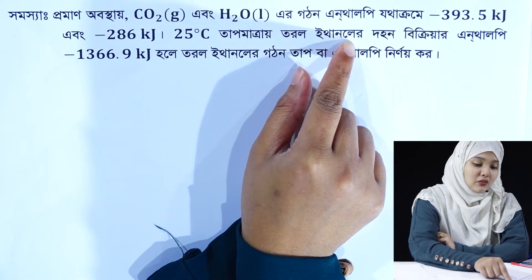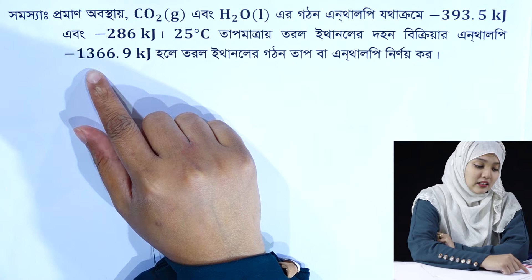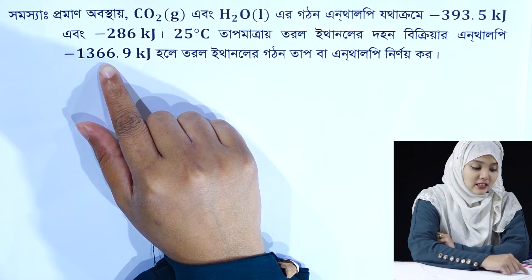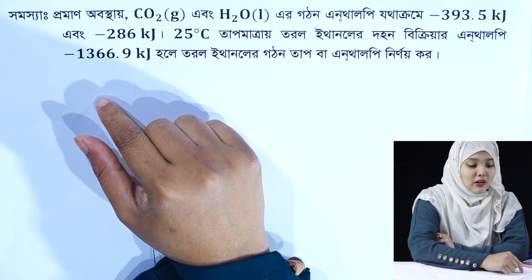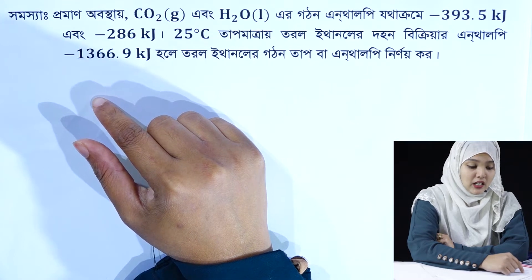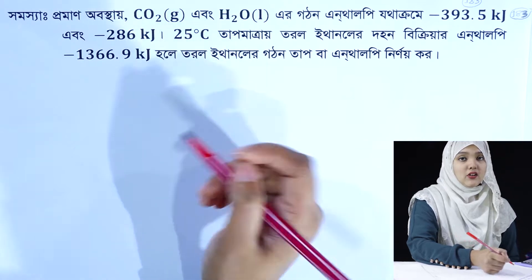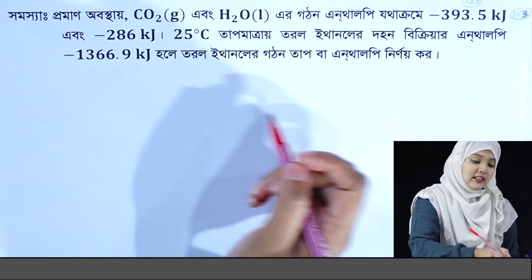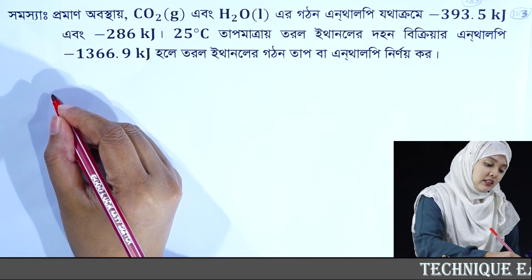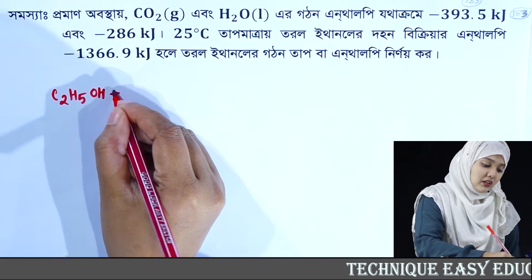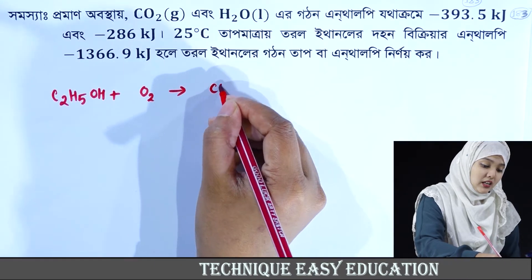So, the enthalpy value given is minus 1366.9 kJ for carbon dioxide.